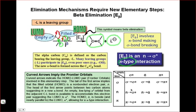If we come down here to our table of frontier orbital interactions, we can see that this is an example of an n-to-σ* type interaction.